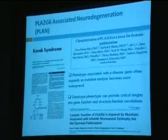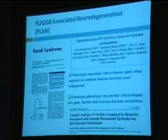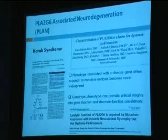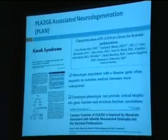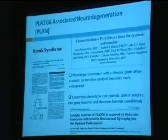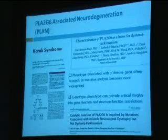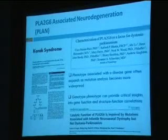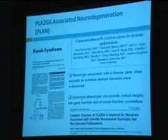Genotype-phenotype correlations can provide critical insights into gene function and structure-function correlations. A paper from Engel et al. investigated the functional effects of mutations in PLA2G6 causing the early-onset disorder versus the milder later-onset disorder. They demonstrated that mutations associated with infantile neuroaxonal dystrophy obliterated the enzymatic activity of PLA2G6, but this was not seen with mutations that caused the dystonia-Parkinsonism phenotype.